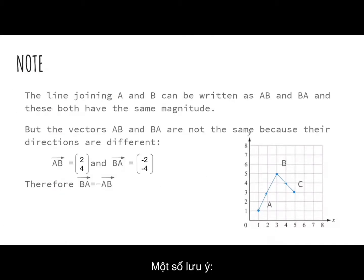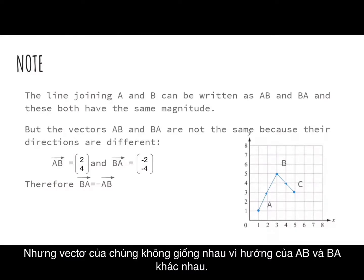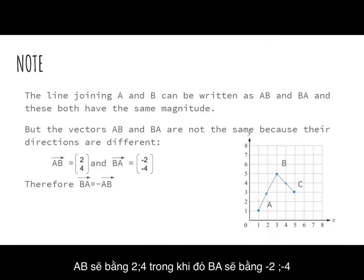So you can say that BC equals (2, −2), meaning move 2 right and 2 downwards to get to point C from point B. Here is a note: you can see that vector BA will be equal to minus vector AB.